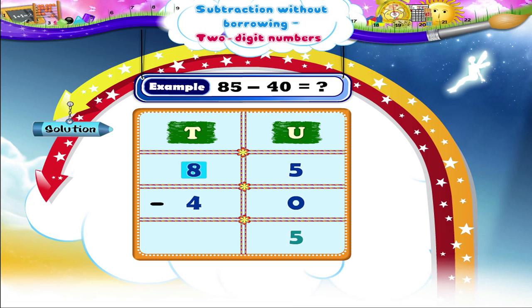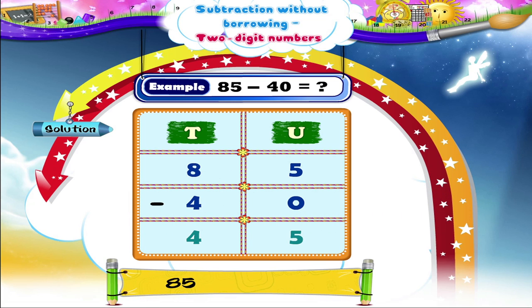Now, 8 tenths minus 4 tenths equals 4 tenths. Thus, 85 minus 40 is equal to 45.